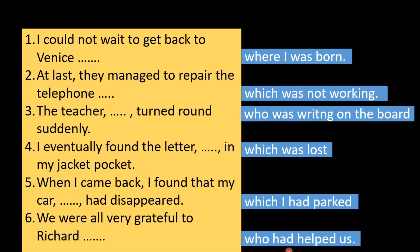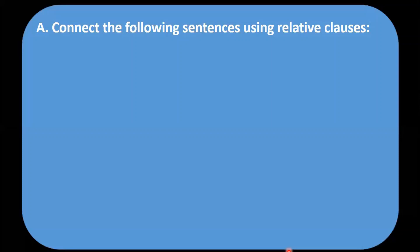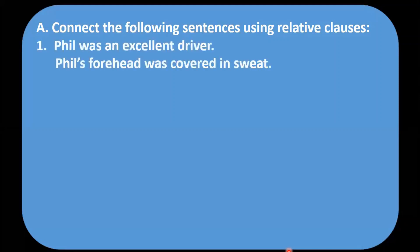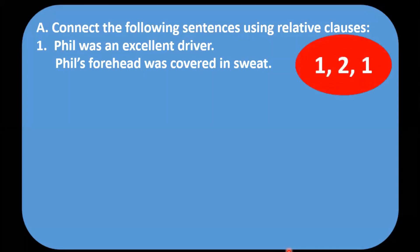Moving forward, there is one more question. It says: connect the following sentences using relative clauses. This is the second exercise. Here you have two sentences: Phil was an excellent driver. Phil's forehead was covered in sweat. How to do this question? I am going to give you a trick — the trick is very simple. The trick says: one to one.